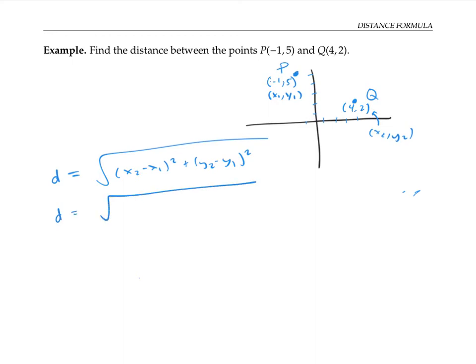Plugging into our formula, we get d is the square root of x2 minus x1, so that's four minus negative one squared, and then we add y2 minus y1, so that's two minus five squared. Working out the arithmetic, four minus negative one is five squared, plus negative three squared. So that's the square root of 25 plus 9, or the square root of 34.